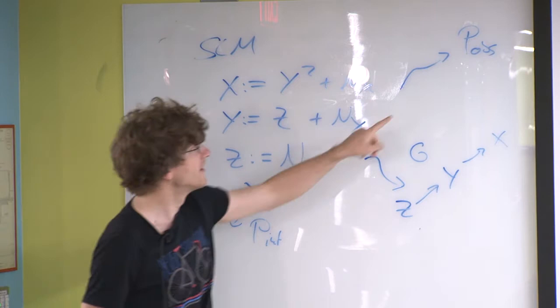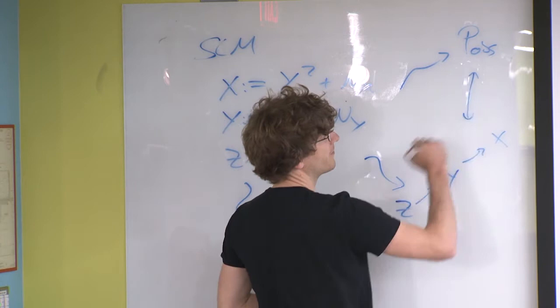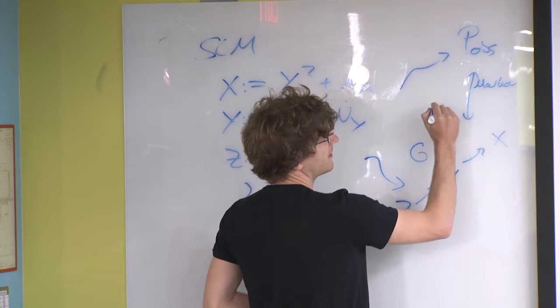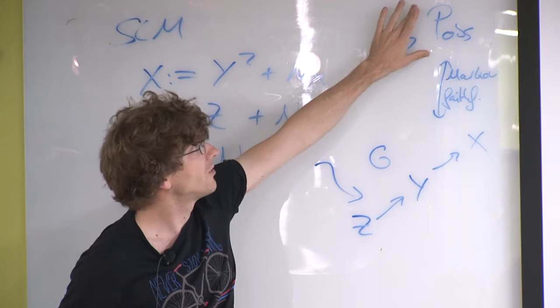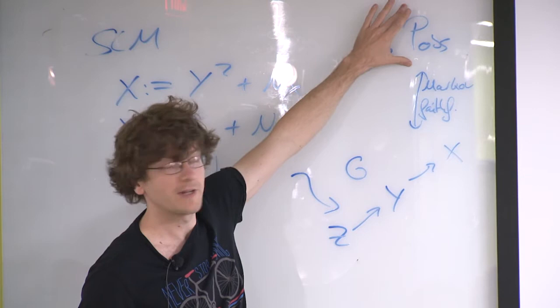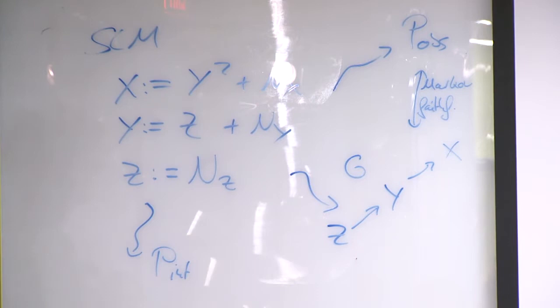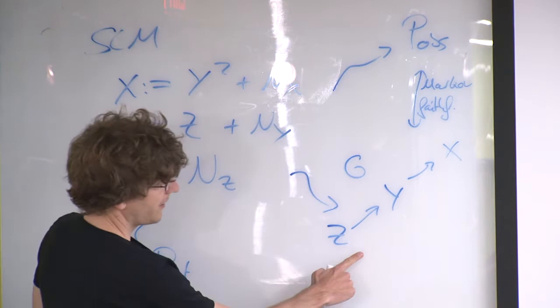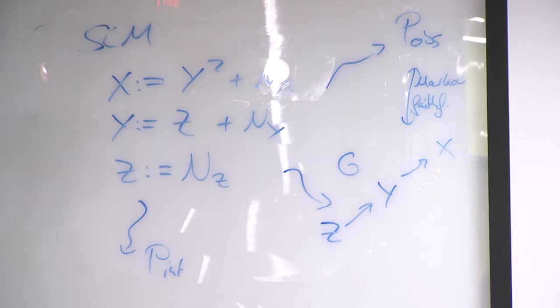The first idea we looked at was independence-based methods, which establish a link between the distribution and the graph by assuming the Markov condition and the faithfulness condition. If you assume these two conditions, you have a one-to-one correspondence between d-separation statements in the graph and conditional independence statements in the observational distribution. The overall idea: look for all conditional dependencies in the data, and because of these assumptions, they correspond to d-separation statements, which you can use to reconstruct the corresponding graphs.